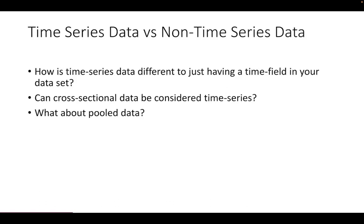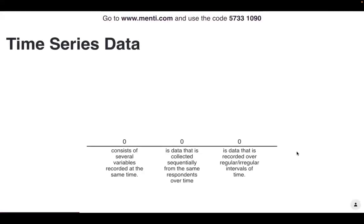Time series data can get confused with other data types. When I first started with time series data, I had issues understanding the different data structures. So I've created some questions where you can have a go at matching the data types to the correct definition, just to broaden your understanding. We'll start off with time series data — can you select the right definition? If you want to head over to Mentimeter and pop in your votes, we can then go ahead and discuss the answers.